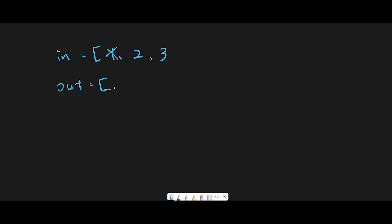So when we call peek, we pop numbers from input one by one and append them to output. First we pop three and append three to output, then pop two and append two, then pop one and append one. Now output has three, two, one — so the first number is one at the last index.